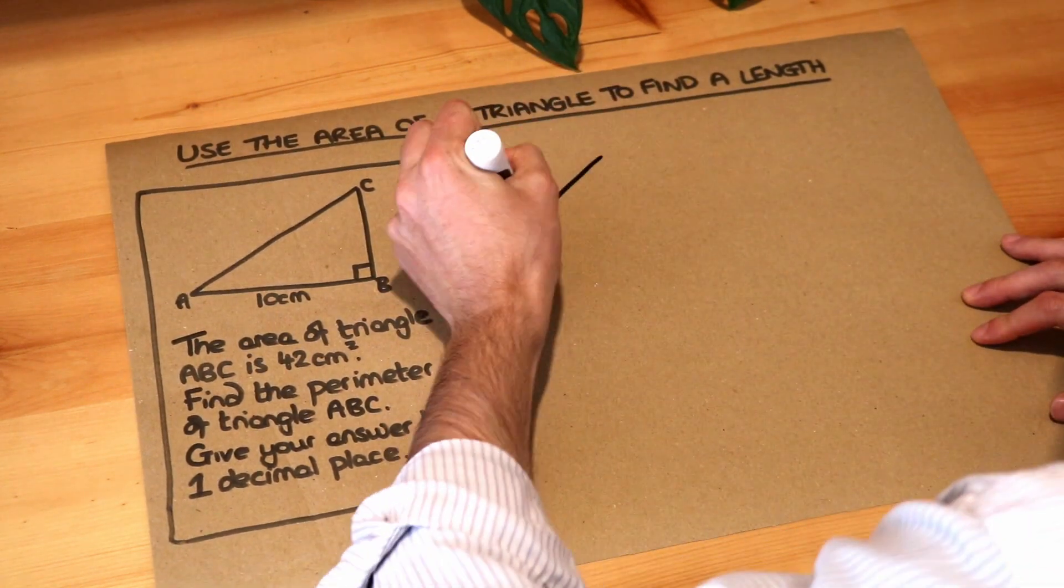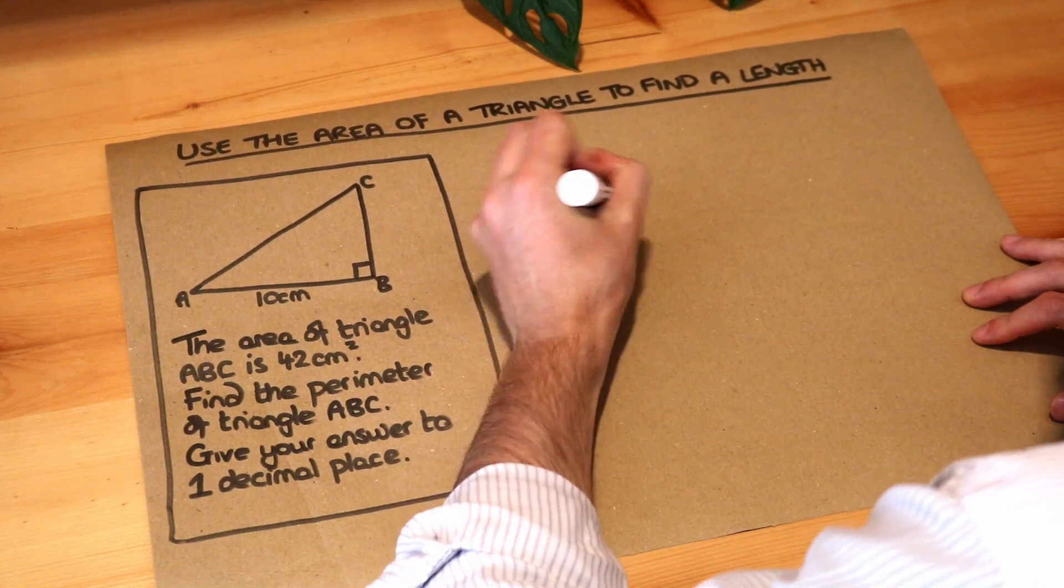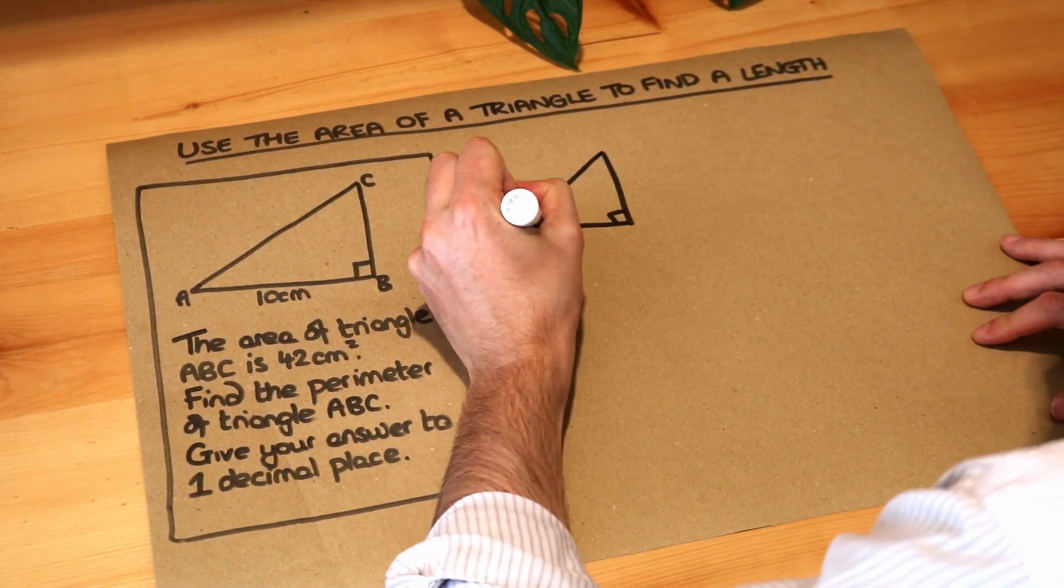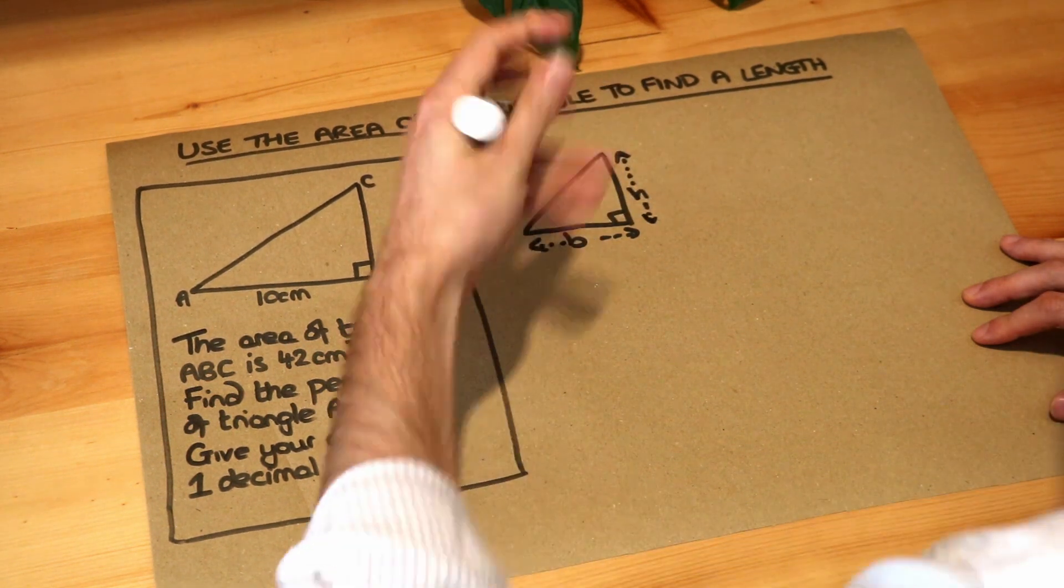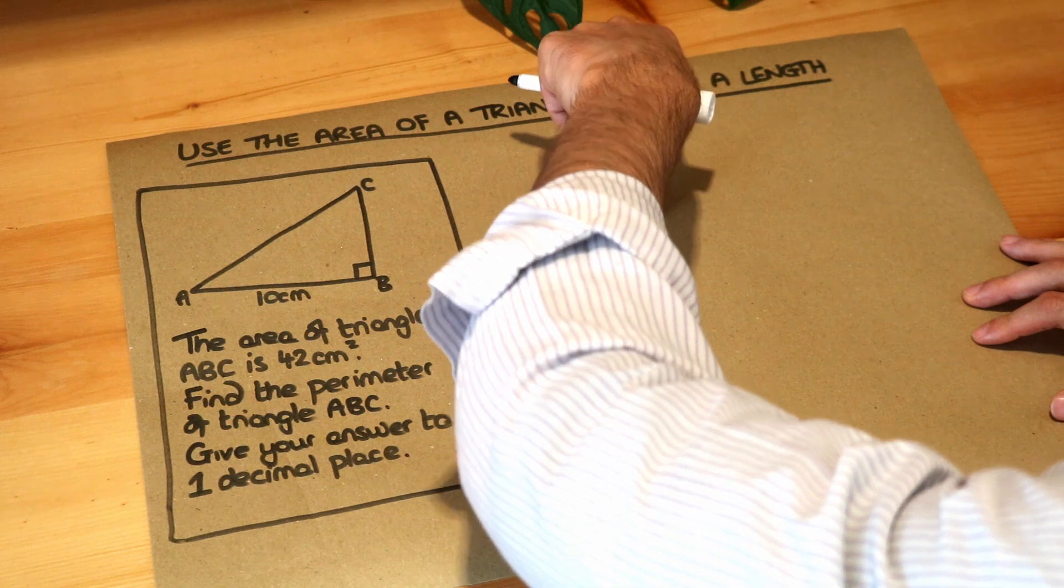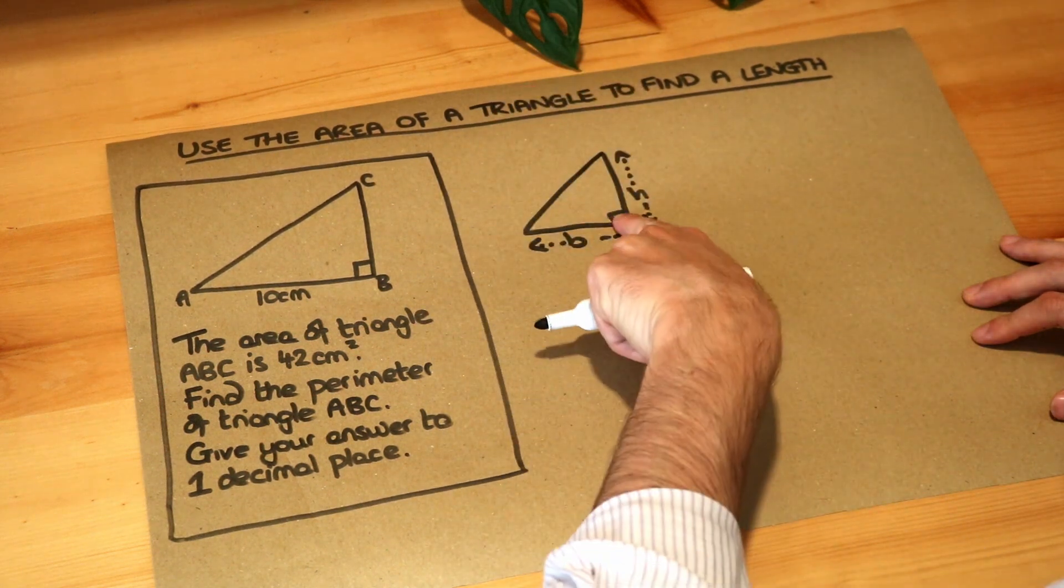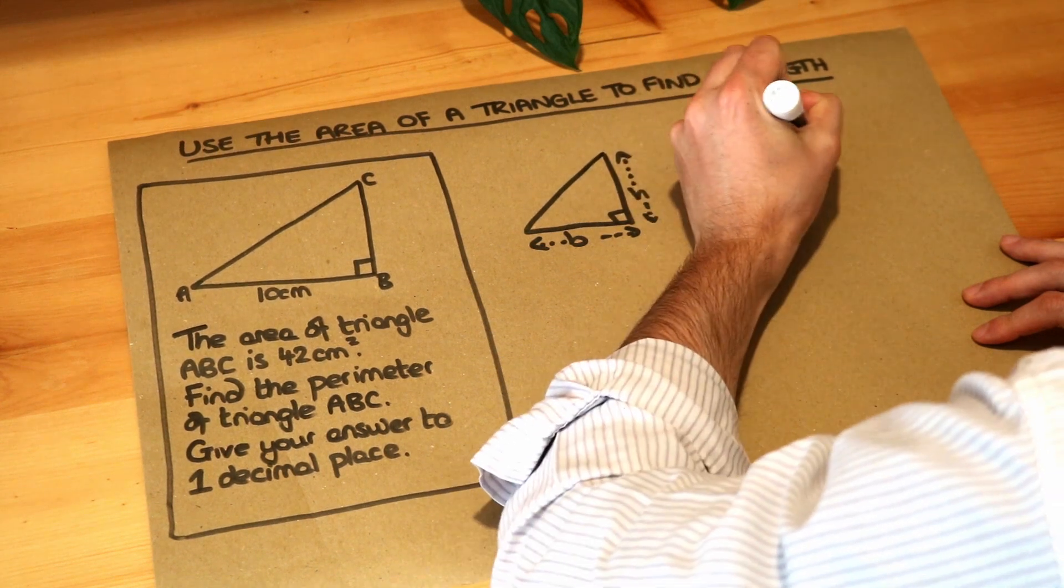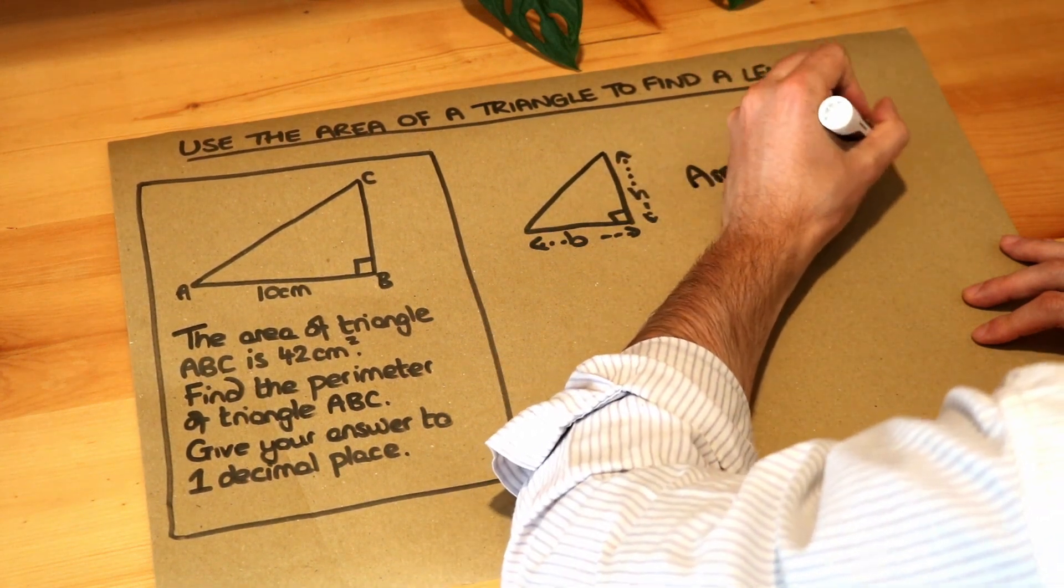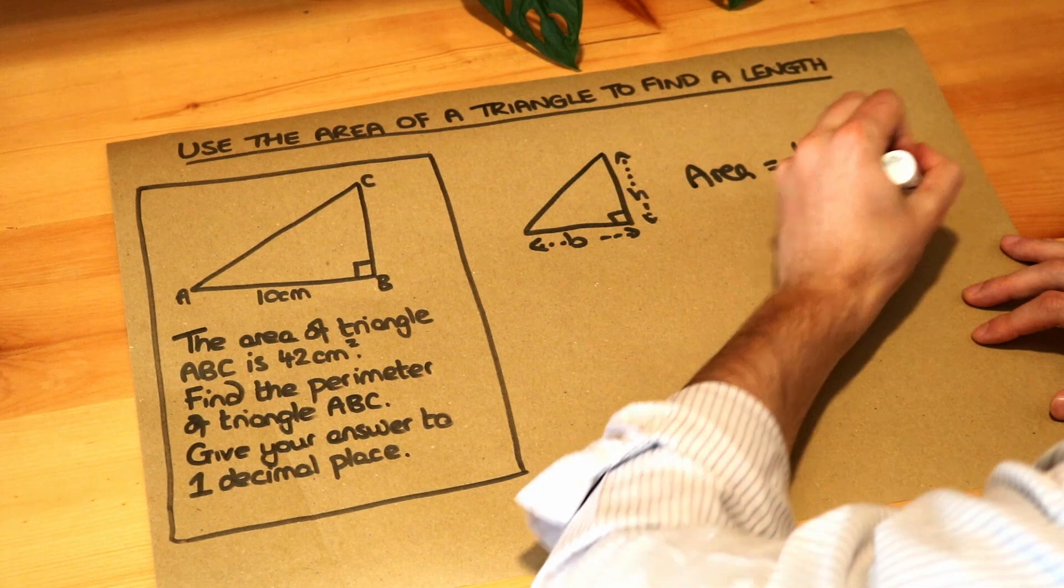Well let's remind ourselves how we find the area of a triangle. If we've got the base of the triangle B, and we've got the perpendicular height of the triangle. By perpendicular height, I mean the height of the triangle is at right angles to the base, which it is in this case. You can see that right angle. The area is half times base times height. So we're going to use that formula.